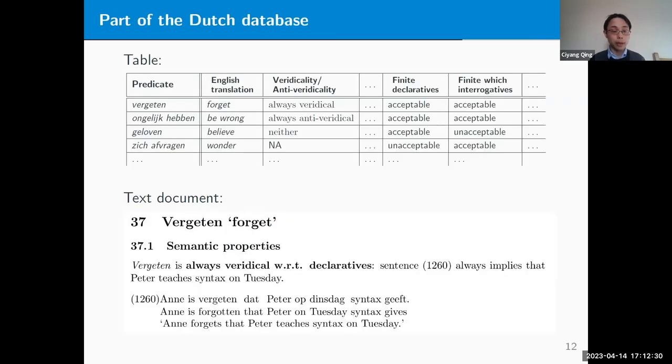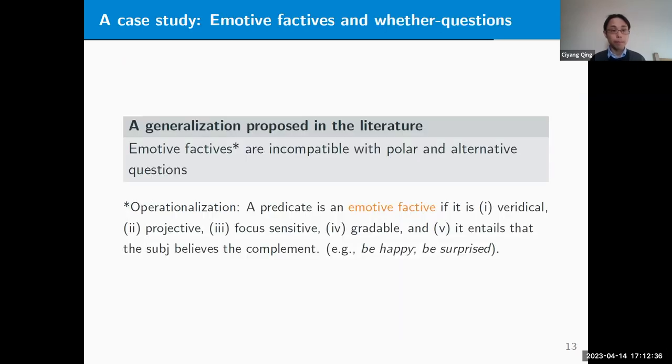Here is just an example of the database: the table and the text document for the Dutch database. To present a case study of how one might use this database to assess generalizations cross-linguistically: